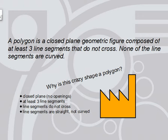Why is this crazy shape a polygon? It's a closed plane figure — there are no openings — at least three line segments, the line segments do not cross, and the line segments are straight and not curved.